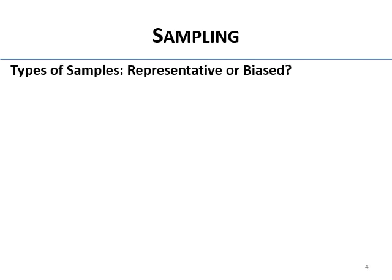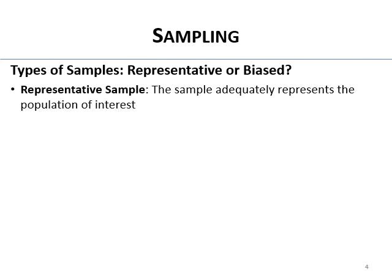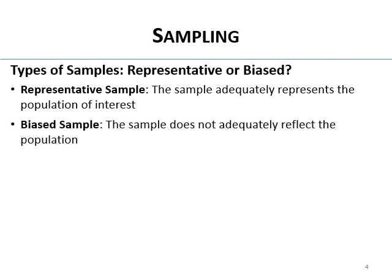The two major ways of thinking about a sample are: is it representative or biased? Representative samples adequately represent the population of interest; biased samples do not adequately represent the population of interest.